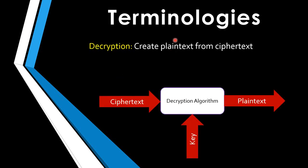The next part is decryption. The receiver may want to retrieve the plaintext from the ciphertext, so they need to apply the reverse process — that is decryption. The input will be the ciphertext received from the sender along with the key, and the decryption algorithm will generate the plaintext. The interesting part is that this cryptographic key is available to both the sender and the receiver, since we need both to encrypt and decrypt.